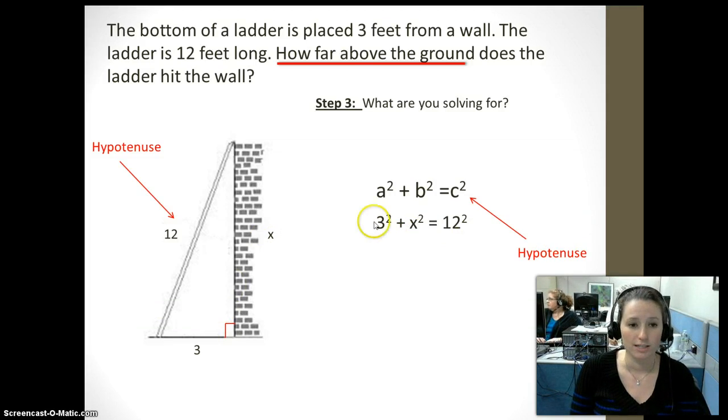So now, what is 3²? 9. Very good. Make sure that you do not put 6, because 3² means 3 times 3. It does not mean 3 times 2. So we have 9. What is 12²? 144. Very good job. So now, I have 9 + x² = 144. This is now just an algebra problem that you should know how to solve, because you guys are already past algebra 1, hopefully.